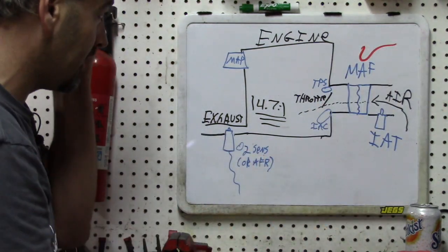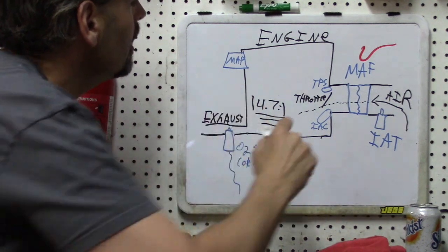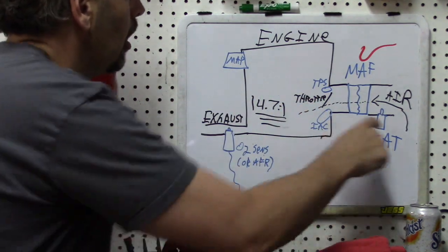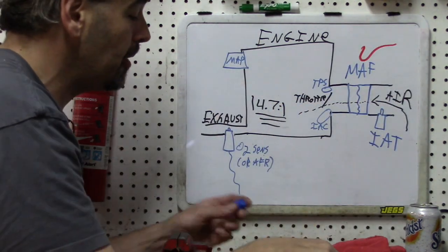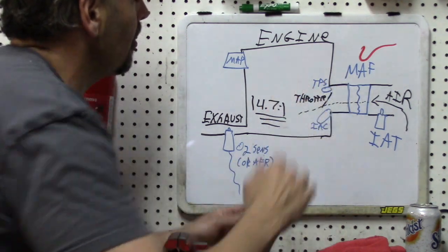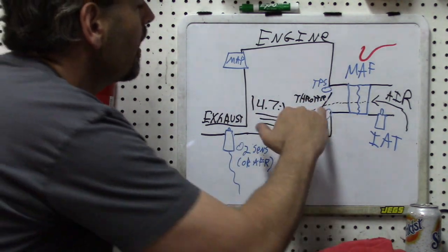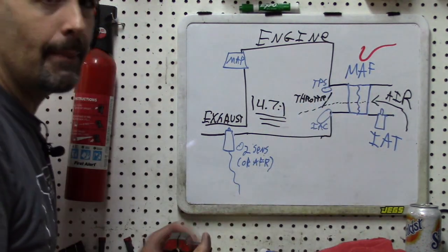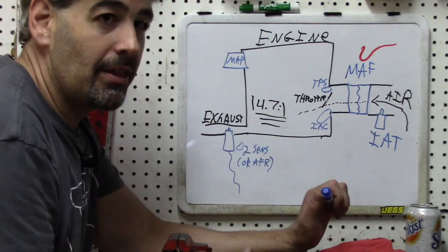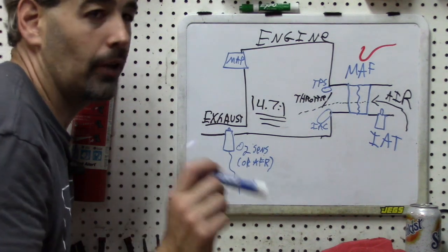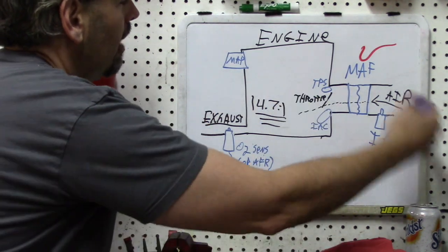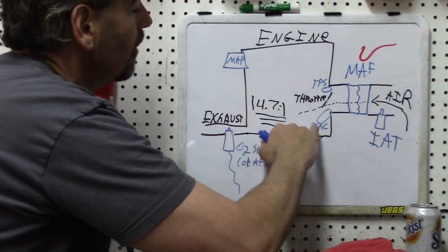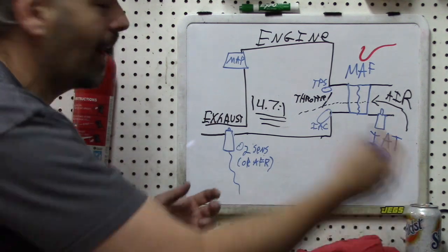The air comes in, its temperature is measured by the IAT (intake air temperature sensor), then goes through the MAF. When the air passes the throttle, the throttle position is noted by the engine computer. The engine computer knows how open the throttle is through the throttle position sensor. There is also idle air control, which allows a bypass of air to control idle — the only PCM-controlled method for air intake.